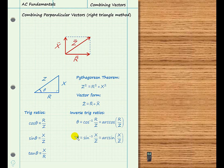We also have the arc sine, read as the angle whose sine is x over z. Last, the arc tangent function is used to find the angle whose tangent is equal to x over r.